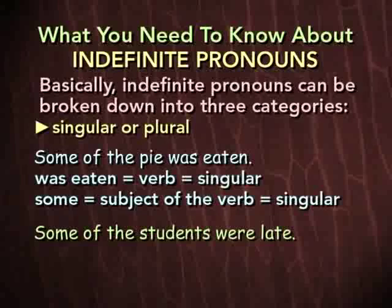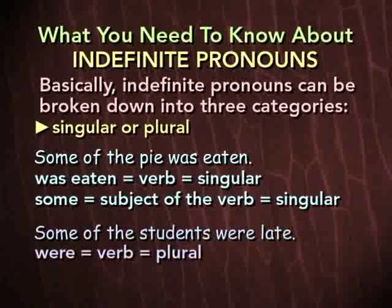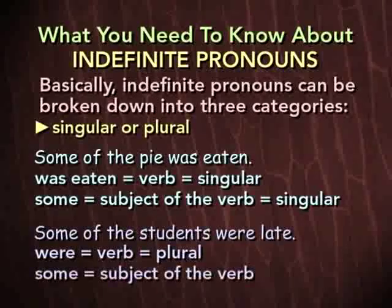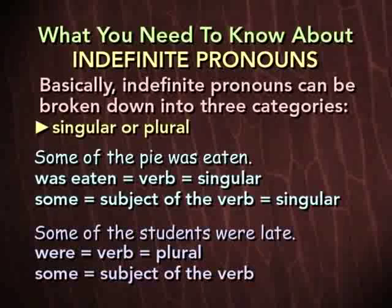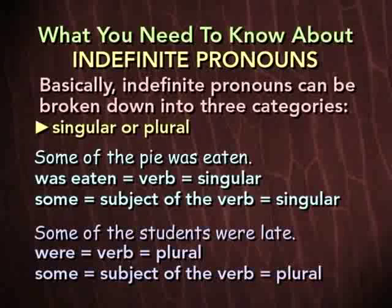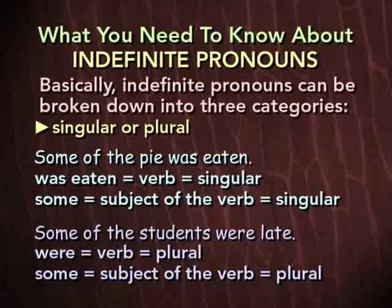However, look at this sentence: 'Some of the students were late.' Here the verb is 'were,' which is a plural verb. Why is a plural verb used? The subject is the indefinite pronoun 'some,' but in this sentence, 'some' refers to more than one person — some of the students means two, three, four, a group of students. Therefore, it refers to a plural subject, and that's why the plural verb 'were' is correct. So we have the same word, the same indefinite pronoun, as the subject in each of these two sentences — but in one case the subject is singular, in the other it's plural. That's the way it is with the SANAM pronouns.